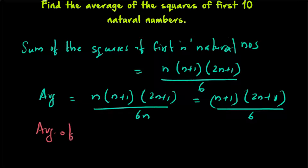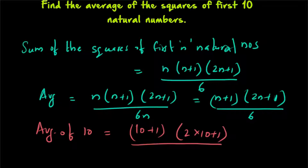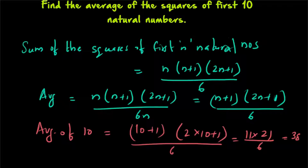So the average of the squares of the first n natural numbers is (n+1)(2n+1)/6. Here we are asked for the average of the squares of the first 10 natural numbers, so n equals 10. It will be given by (10+1)(2×10+1)/6, which is 11 × 21 divided by 6, giving you 231/6, which equals 77/2, which is 38.5.